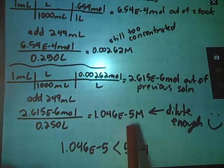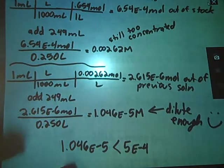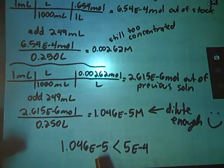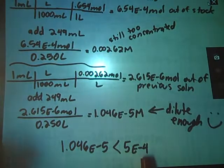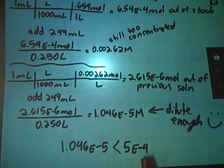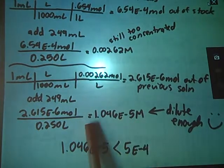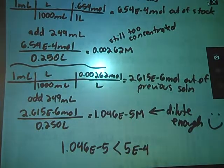Moles divided by liters gives me a molarity, and 1.046 times 10 to the negative 5th is less than that required 5 times 10 to the negative 4th molar solution. So this one is, in fact, dilute enough to be used in whatever instrumentation you're dealing with.